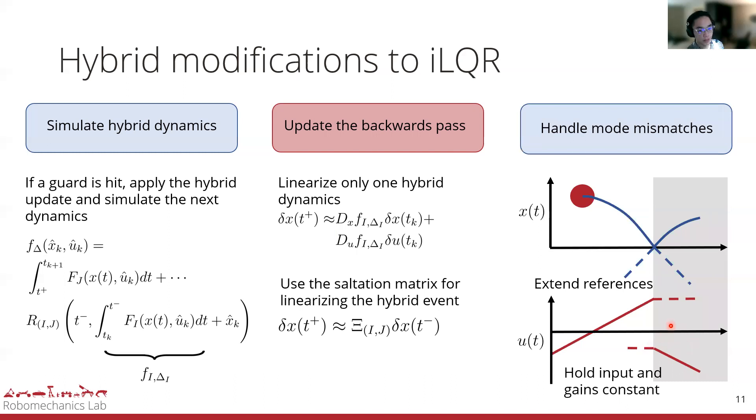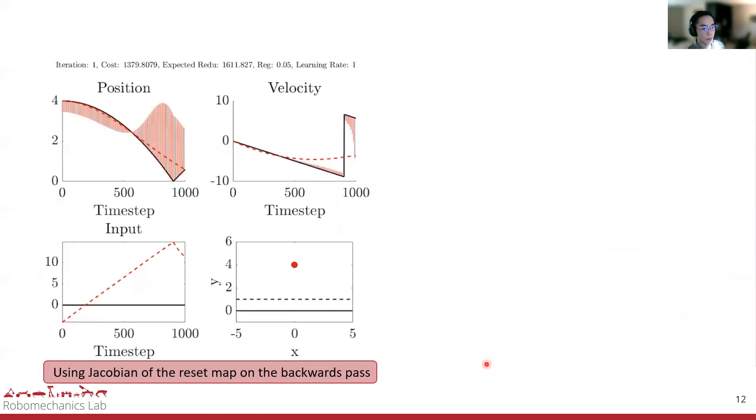By applying these modifications to iLQR, we extend it to work for hybrid systems. In this example, we have a bouncing ball with thrusters on it in the vertical direction. The ball wants to get to this dashed line and ending with zero velocity. For this first example, we show our hybrid iLQR algorithm, but this one uses the Jacobian of the reset map instead of the saltation matrix to demonstrate what can go wrong. We see the gradient information here wants to take away the contact rather than utilize it.